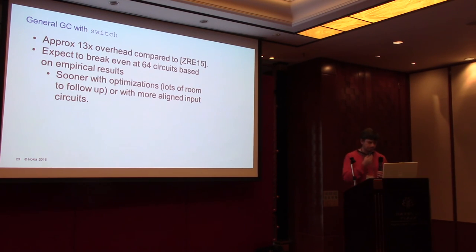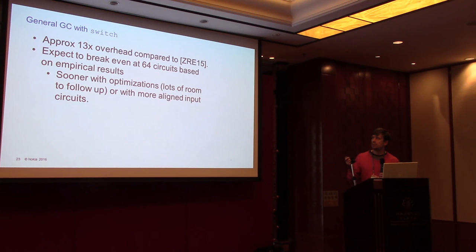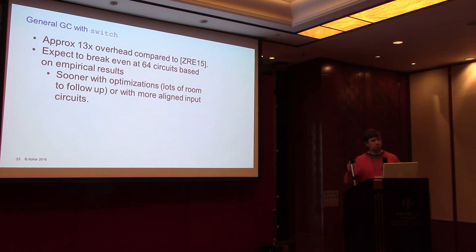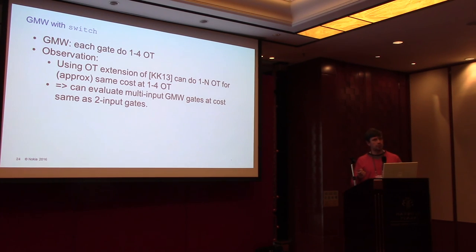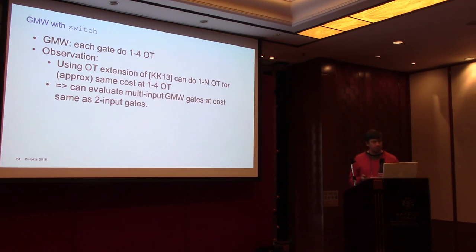This cost is significant. A simple calculation shows we are about 13 times lower overhead compared to the top-gates approach. To break even, we need larger clauses — we expect to break even at 64 circuits — and we think we can do better with optimizations. If we go to the GMW approach rather than garbled circuits, we can do much better. The intuition: in garbled circuits, you need to send long secrets inside OT — the entire garbling is one long secret, and 1-of-K OT requires K of those long secrets.